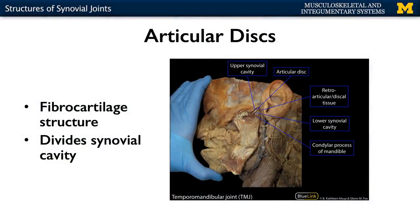Everything we just discussed are components found in all synovial joints. Now let's talk about a few specializations found in some joints. Articular discs are composed of fibrocartilage and they actually divide the synovial cavity. As you can see in this illustration, typically they're not very big. This is the mandible articulating with your temporal bone — think about what joint that would be: temporal, mandible — the temporomandibular joint, your TMJ.